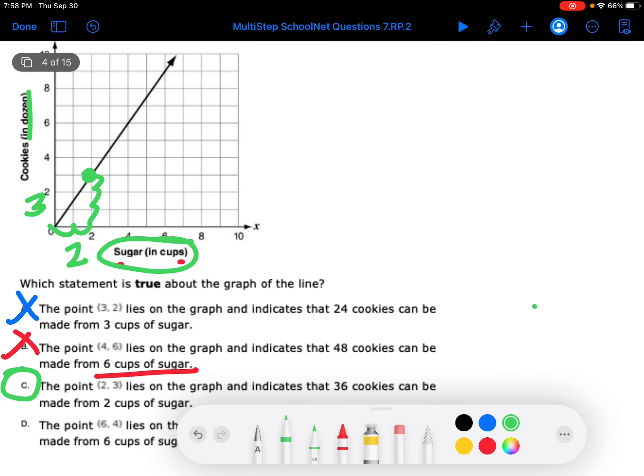The point (6, 4) lies on the graph. 1, 2, 3, 4, 5, 6. 1, 2, 3, 4. Well, it's not on the line, so it's not there.